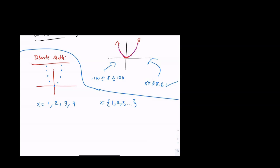So x can't be a decimal in this example for discrete math. x can only be 1, 2, 3, and as you can follow the pattern, 4, 5, 6.